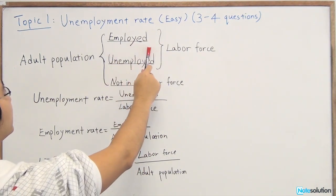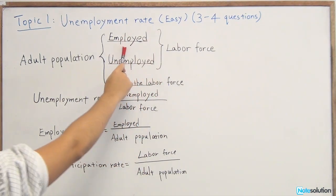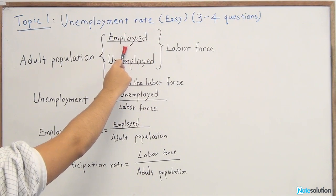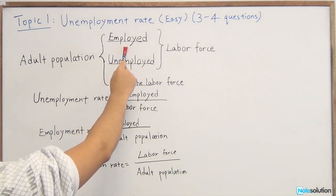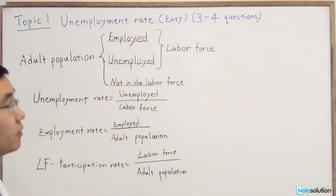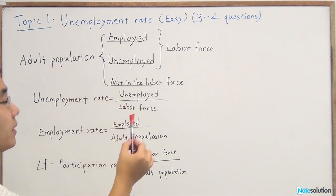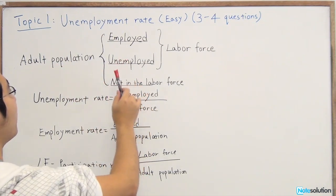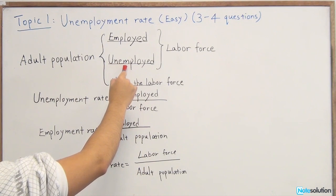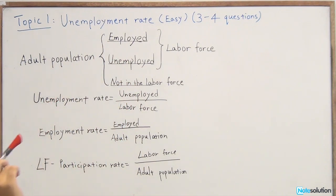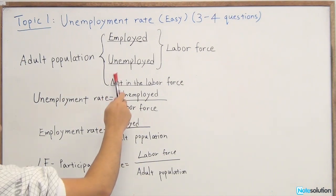The adult population is built up by three big groups. The first one is employed people. For people who are employed, that means they have a job, no matter if it's a full-time job or a part-time job. For the unemployed people, this is actually a bit tricky because they are the people who don't have a job and, the second part is important, who are currently looking for one.